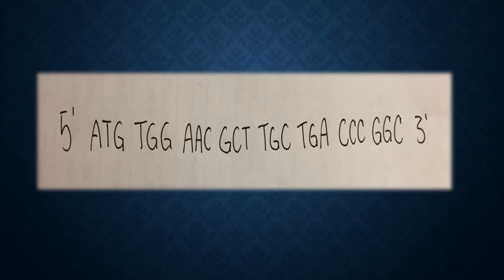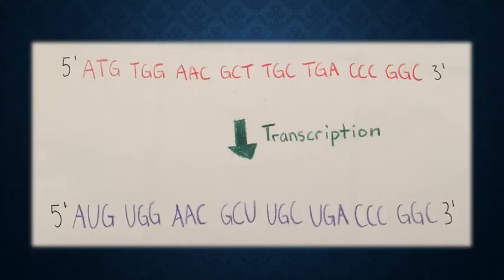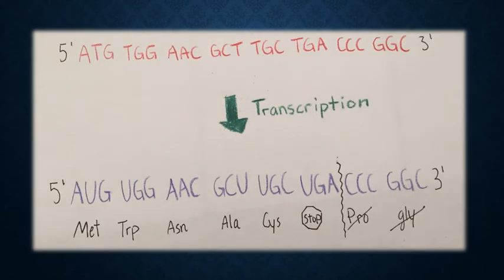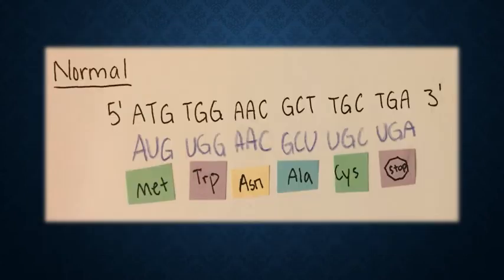Let's transcribe the coding strand by replacing the thymine with uracil to get mRNA. We can then use the codon dictionary to translate the mRNA sequence to get the amino acids with their corresponding codons. Notice how the TGA codon transcribes to UGA, which is a stop codon, so we do not have to worry about everything else afterwards. Here is everything we just went over.